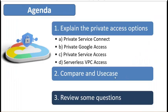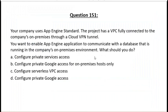Finally, let us review some exam questions. Question 151: Your company uses App Engine Standard, and the project has a VPC fully connected to the company on-prem through a Cloud VPN tunnel, and you want to enable the App Engine application to communicate with a database sitting on-prem. What should you do? This refers to a serverless service accessing a resource on-prem, so the answer is Serverless VPC Access.